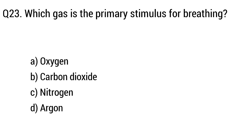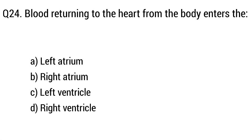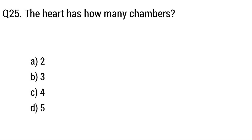Question 23. Which gas is the primary stimulus for breathing? Option A: Oxygen. B: Carbon dioxide. C: Nitrogen. D: Argon. The right answer is Option B: Carbon dioxide. Question 24. Blood returning to the heart from the body enters. Option A: Left atrium. B: Right atrium. C: Left ventricle. The right answer is Option B: Right atrium.